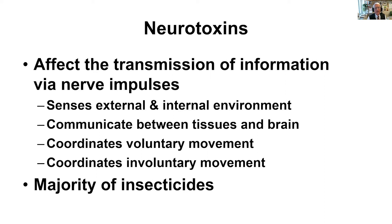The insecticide mode of action that you're probably most familiar with are neurotoxins or nerve toxins. These are chemicals that affect the nervous system of the insect, and the nervous system does for the insect what it does for you. It senses the external environment, it communicates among the tissues, it coordinates voluntary movements such as running, flying, and mating, and it coordinates involuntary movements such as the beating of the heart. Most of the insecticides that you have used in the past are nerve poisons.